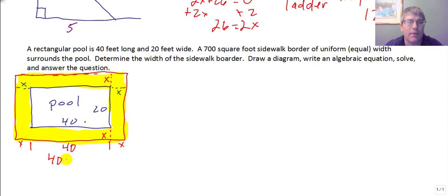The length of the pool is 40 plus 2x. x on the right and x on the left. And we do that same concept here. So this length is 20, but we still have this distance x and x. So the dimension, our width of our pool is 20 plus 2x. The 20 of the pool plus the x on each side for the sidewalk.